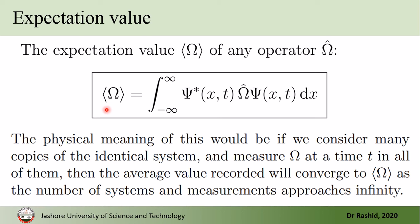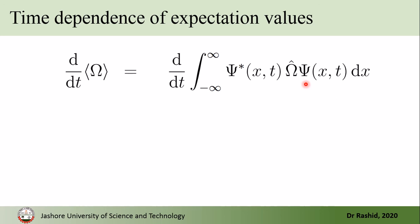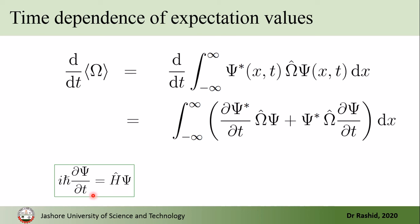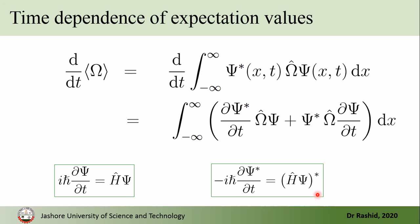Therefore, we take the time derivative on both sides of this equation. Since both psi and psi-star have time dependency and omega-hat does not have any explicit time dependency, after differentiation we write it like this. From the Schrödinger equation, we know that i-h-bar d-psi/dt equals H-hat psi. And if we take the complex conjugate of this equation, we have this one.